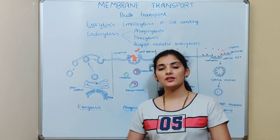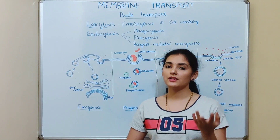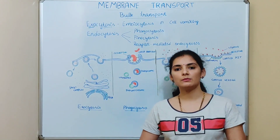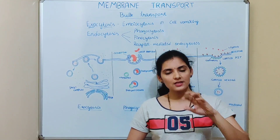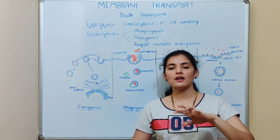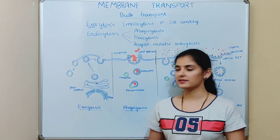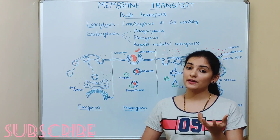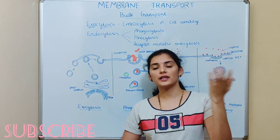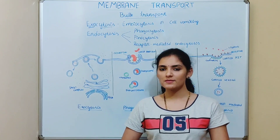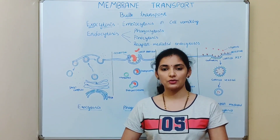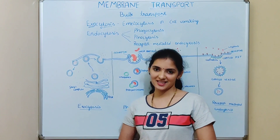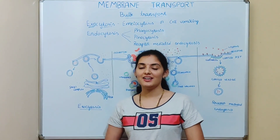Cellular secretions like proteins, carbohydrates, lipids, chemicals, and signaling molecules produced inside the cell are transported out via exocytosis, because those materials are needed by glands or other cells to perform certain functions. We will see how exactly exocytosis takes place by taking an example of protein.